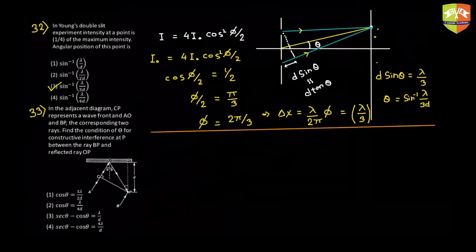So first of all, PC is a wavefront, so P and C are the points on the same wave. Hence P and C are in phase. Phase of P is equal to phase of C. Now what happens? This point C moves forward, gets reflected, and reaches P.